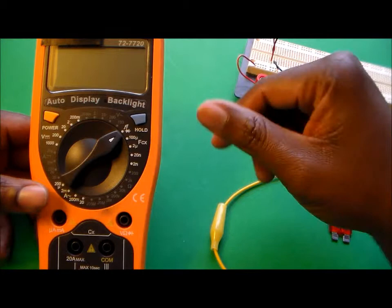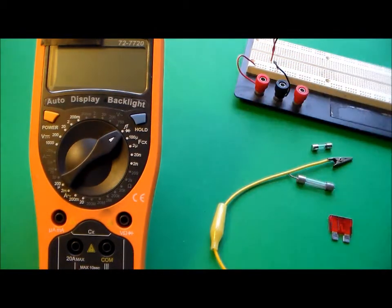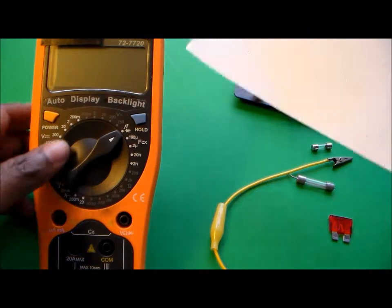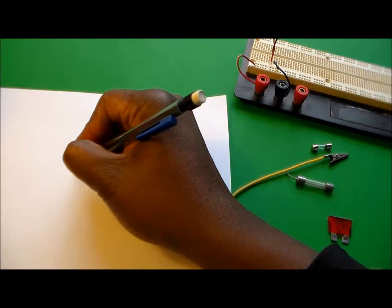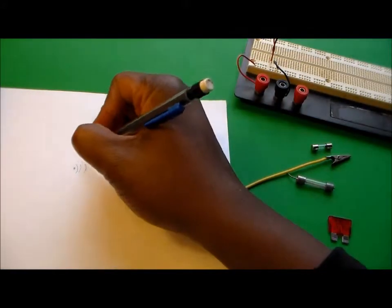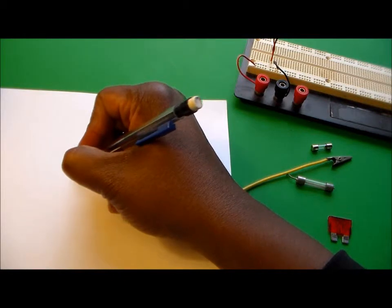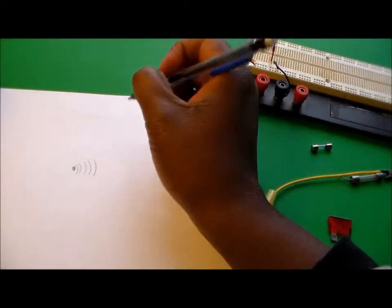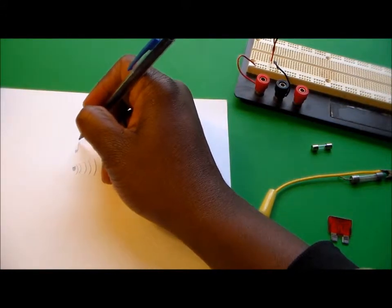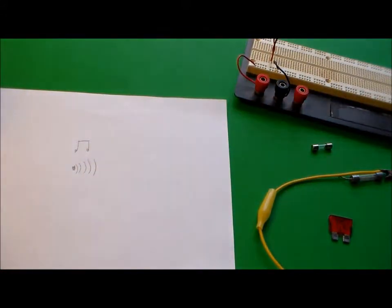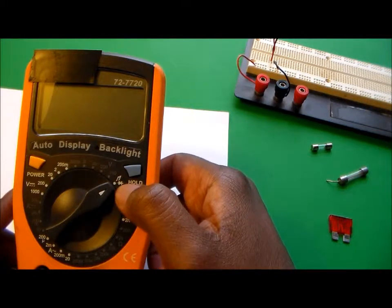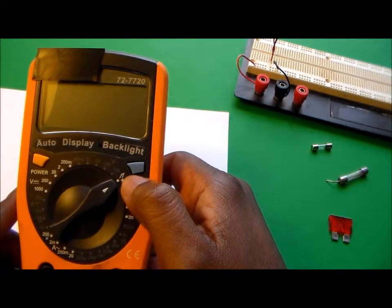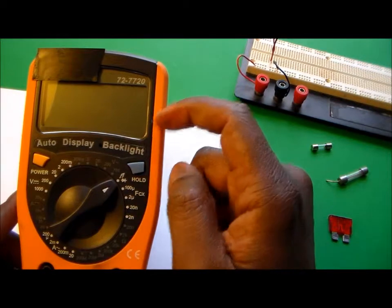The continuity tester typically in a multimeter will have a symbol that looks like sound waves coming from it, or it will look like a musical note. For this device here, the continuity and diode tester has the musical note coming from it for this multimeter.